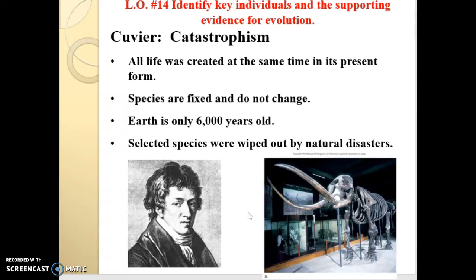Catastrophism was widely accepted in the early 1800s by lots of people — it fit social belief, it fit the current religious belief at that time. The 6,000-year-old Earth is directly based off of biblical aging. The Archbishop of Armagh actually calculated the date of the Earth's formation to October 21st, 4004 B.C. It had huge popularity for a long time because it made people comfortable, fitting their belief system.